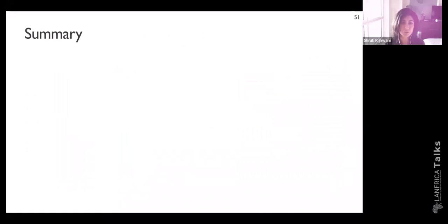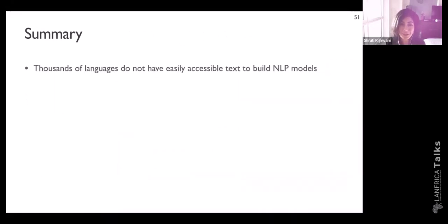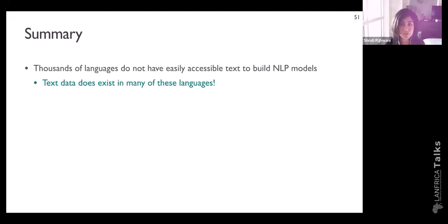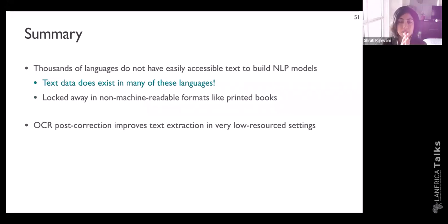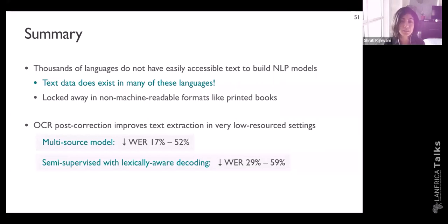To summarize: thousands of languages don't have easily accessible text to build NLP models and datasets because only a few hundred languages are in large-scale multilingual collections. However, text data does exist in many of these languages, but is locked away in formats that aren't machine-readable like printed books. In this talk, I presented methods to improve OCR results in extracting text from documents in very low-resource languages. The supervised multi-source model reduced word error rate by up to 52%, and we got further improvements from lexically aware semi-supervised learning.